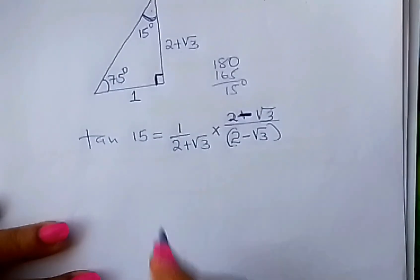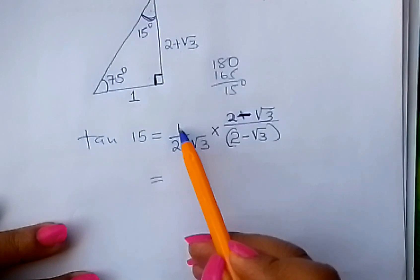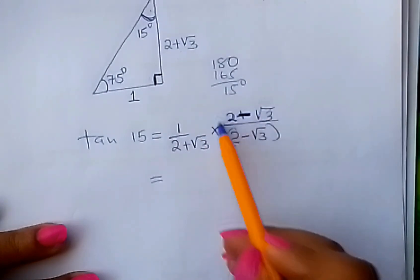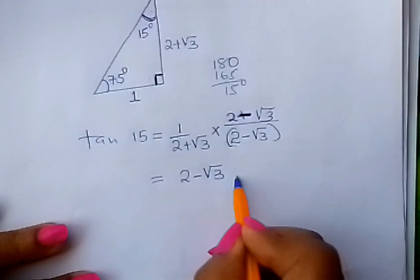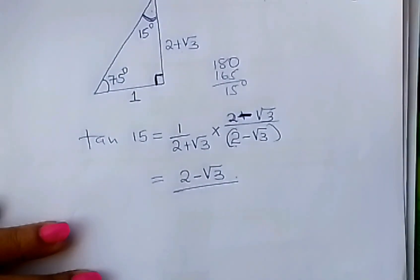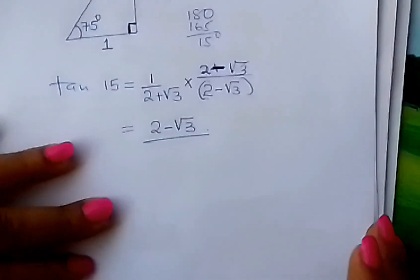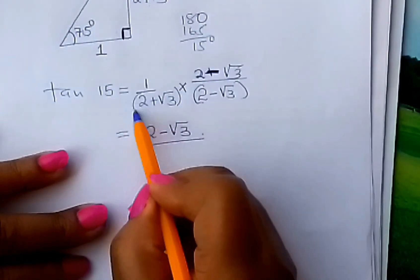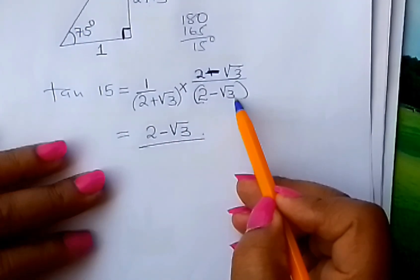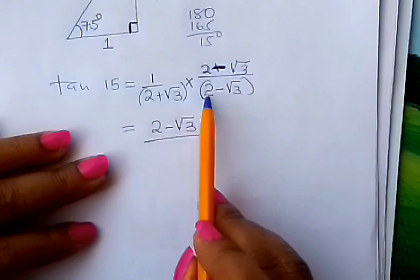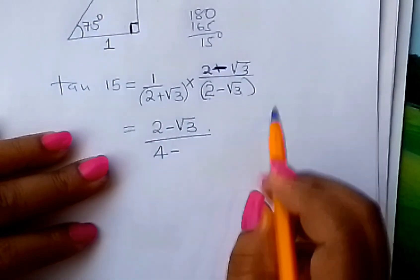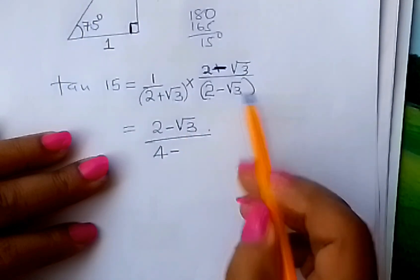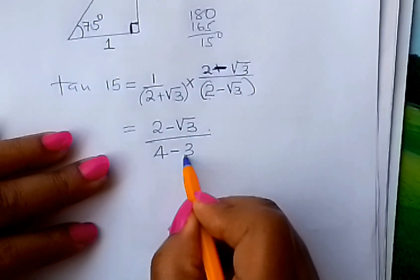So from there, learner, you just come and multiply. 1 times this numerator here, it remains as 2 minus square root of 3. Divide by what? This multiplied by this other bracket. We normally talk of 2 times 2, which is 4, minus square root of 3 times square root of 3 is 3.